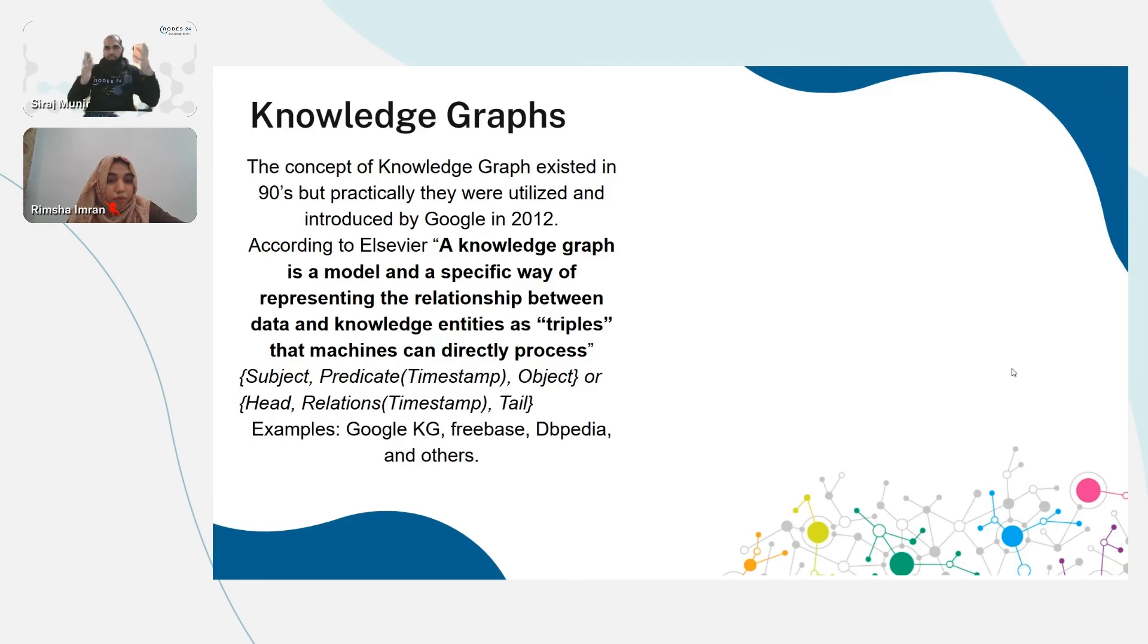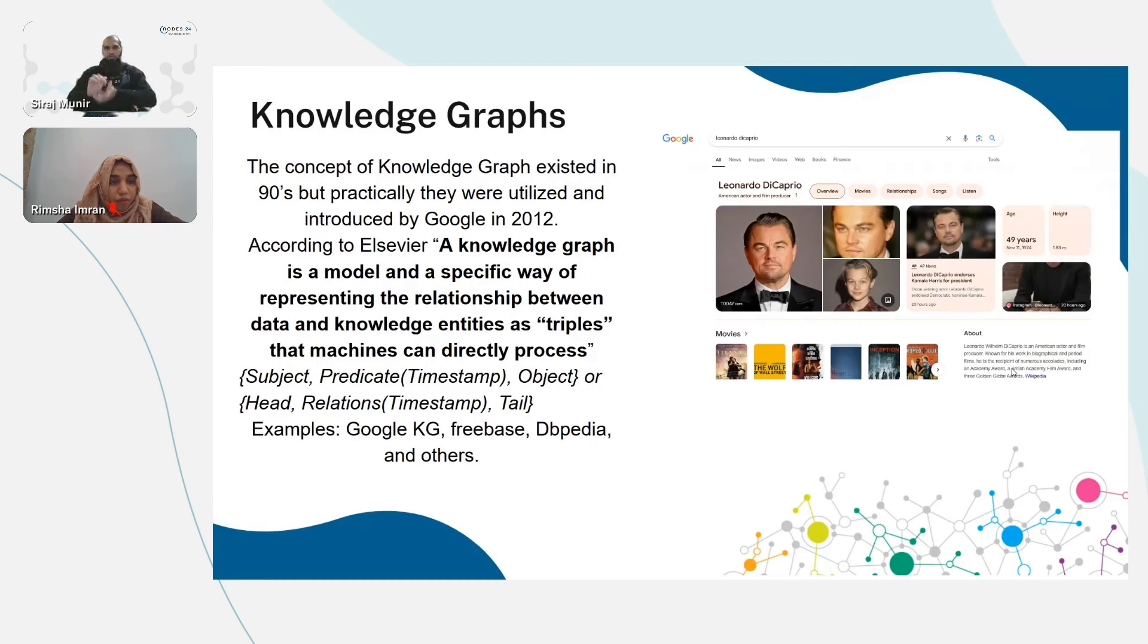According to different definitions, a knowledge graph is basically a data structure that helps you represent real-world entities in subject, predicate, and object form, where the subject is the entity connected to another entity and the relationship is basically the predicate or semantics underneath it.